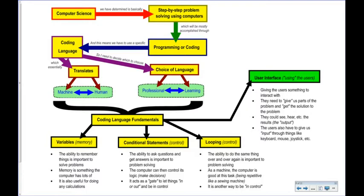Finally, since it's a computer program, we want to involve our users somehow. We want to build an interface for users to interact with — depending on what we're writing, whether it's a game or whatever. They need to give us information and we need to give them information, an input-output sort of thing. The output could be visual, auditory, or whatever. The input could be mouse, keyboard, etc.